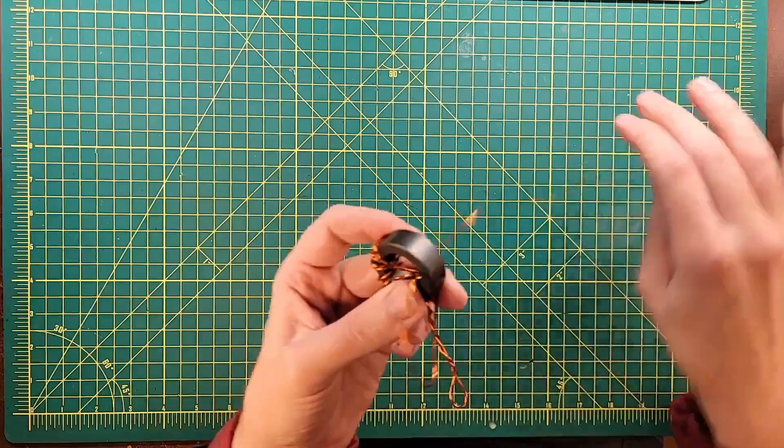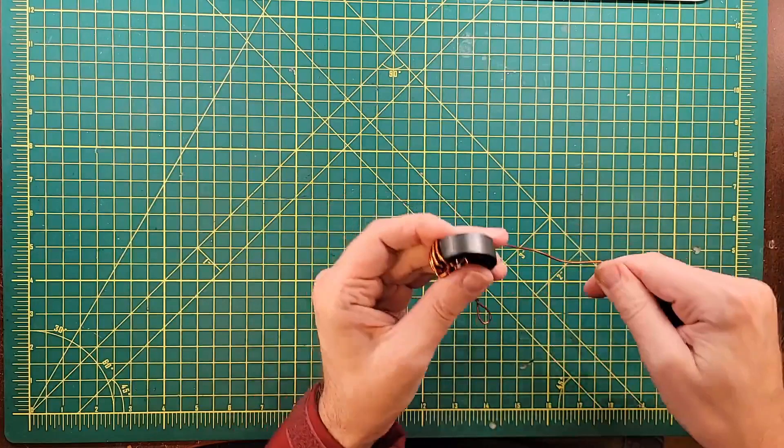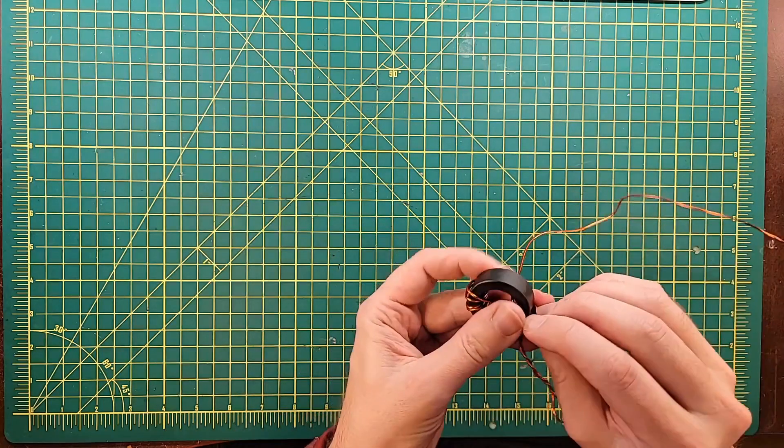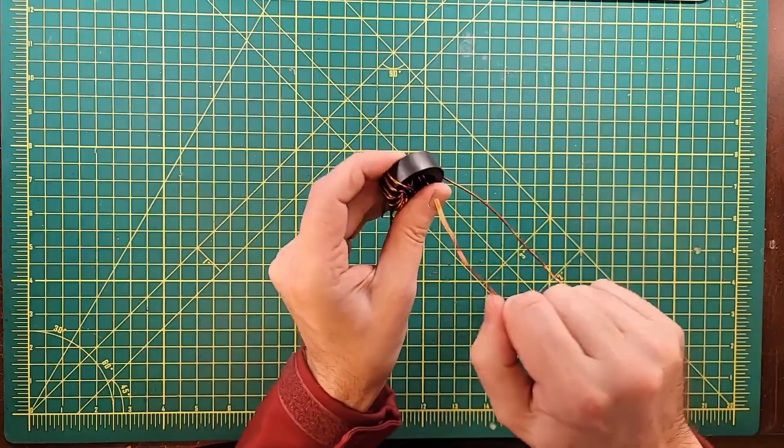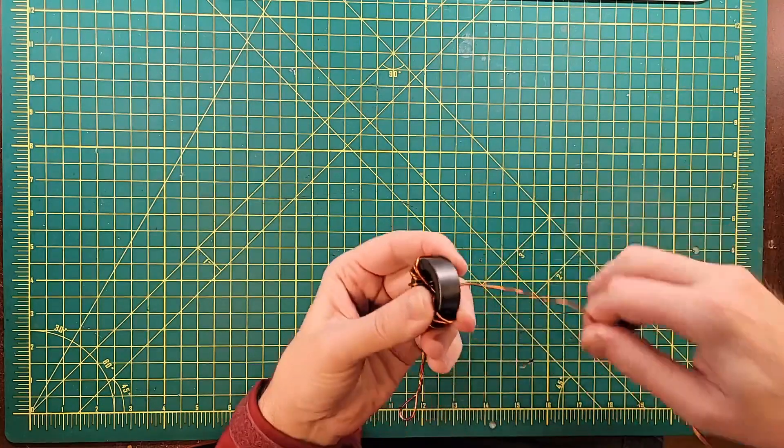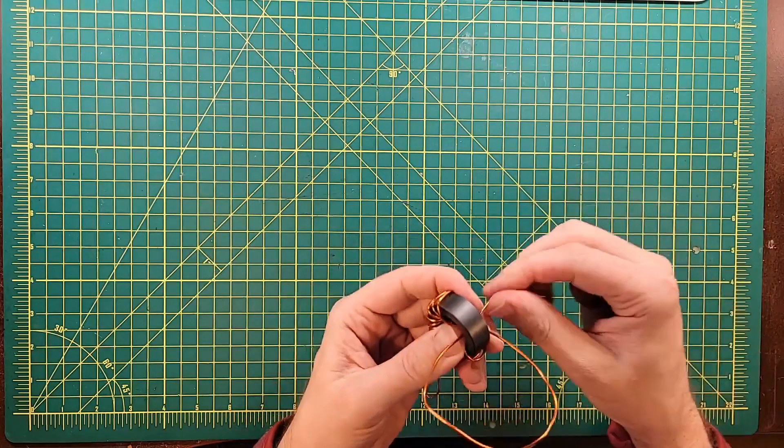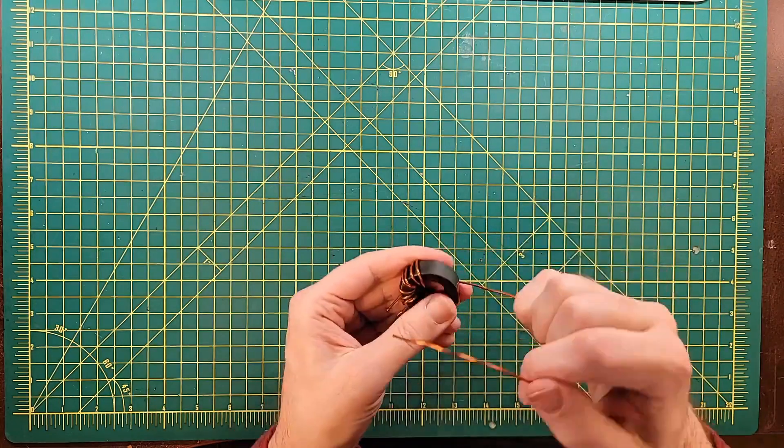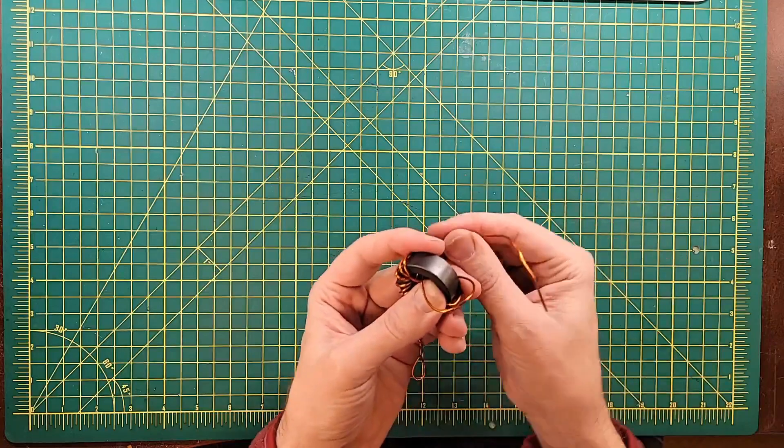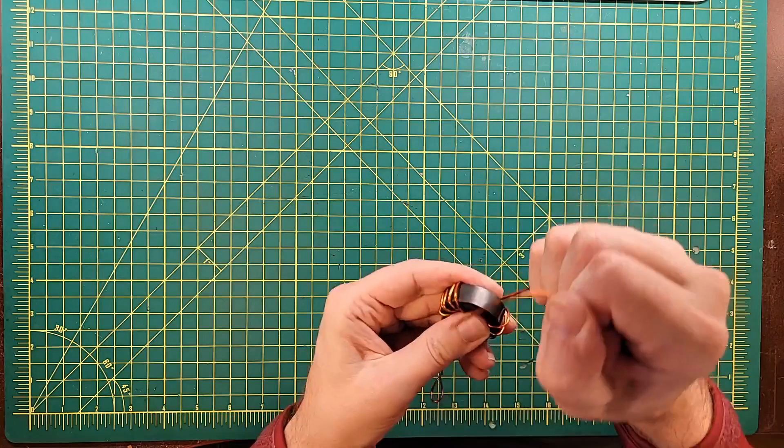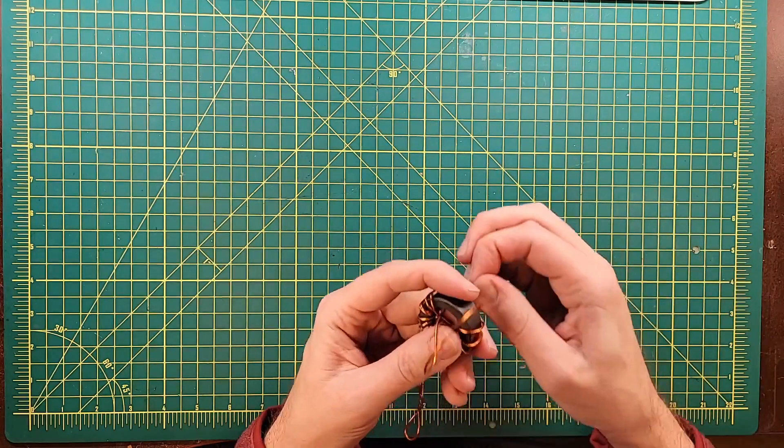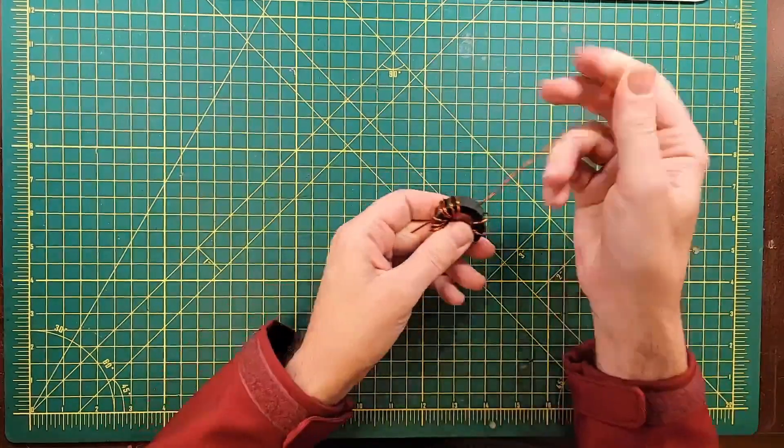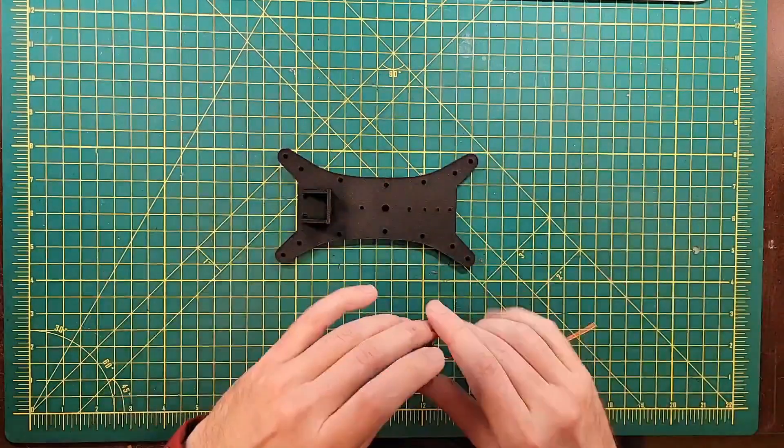This is turn nine. Ten. Eleven. Twelve. 13. And lastly is turn 14. And if we take a look at our frame here, the way this is going to work is we're going to put the toroid in the center.